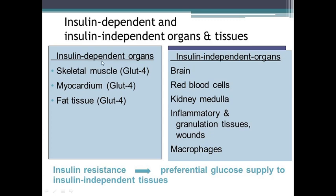Because of sensitivity to insulin action, our organs are divided into two parts. First are insulin-dependent organs, and the next are insulin-independent organs. Insulin-dependent organs need insulin action for consumption of glucose - without insulin, they cannot take and get glucose. These are skeletal muscles, myocardium, and fat tissues. For insulin-independent organs, we have fully independent and partially independent organs. Fully independent organs from insulin include the brain, red blood cells, kidney medulla, inflammatory and granulation tissues, wounds, and macrophages.